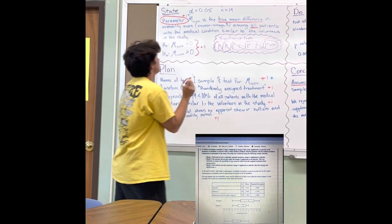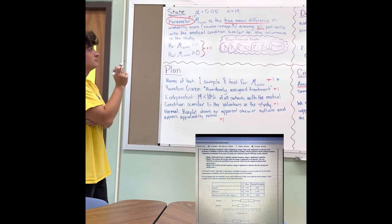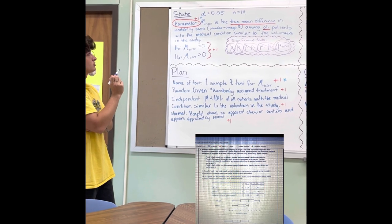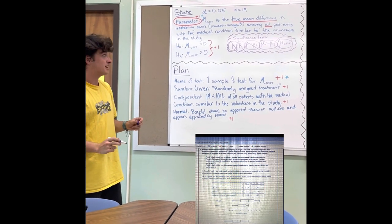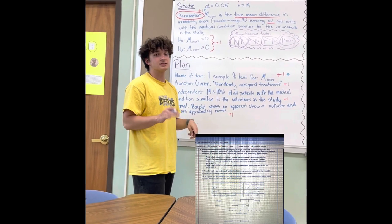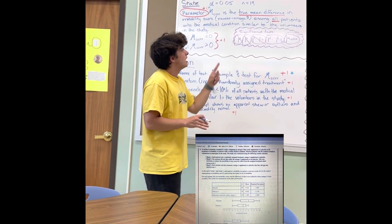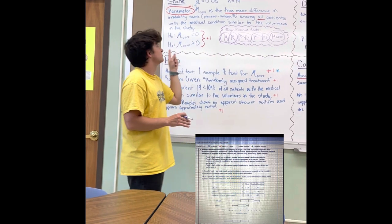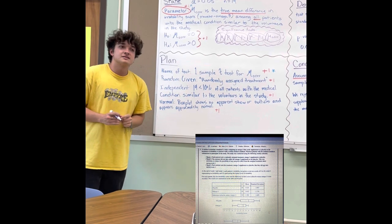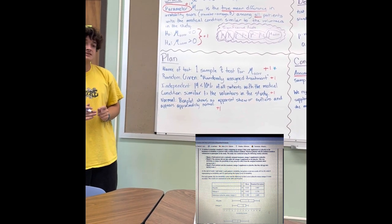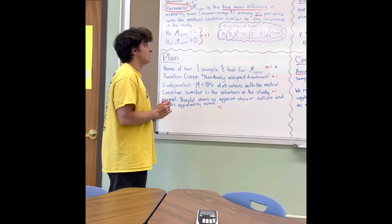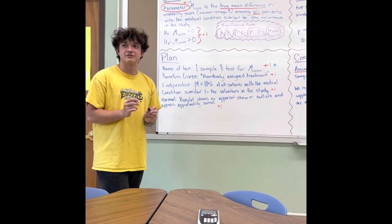For the parameter, we can say mu-difference is the true mean difference in irritability score, specifying that it's placebo minus omega-3 so they know the order of subtraction, among all patients with medical conditions similar to the volunteers in this study. We need the context and must recognize we can't generalize to all people because they were volunteers.